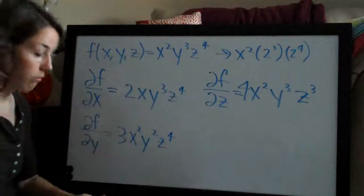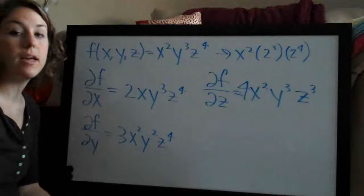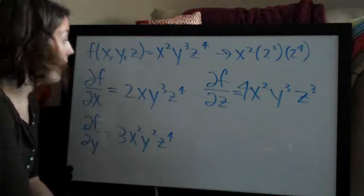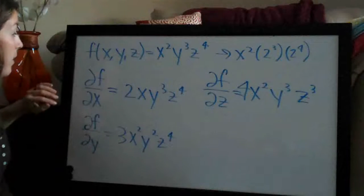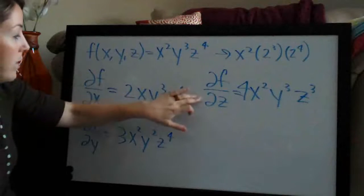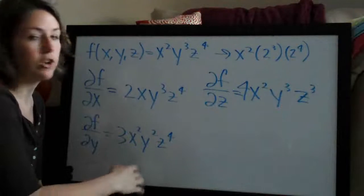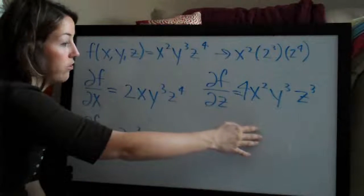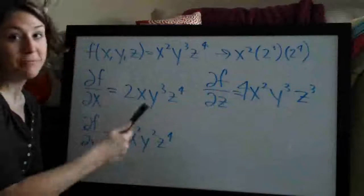Your final answer is a three-part answer. If you're asked to take the partial derivative of this function, because there are three variables, you need each one of these equations. You would want to write all three of these down on your homework or your test because your answer is actually all three of these. So there you have it.